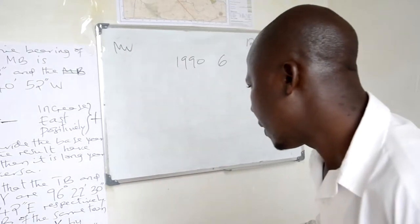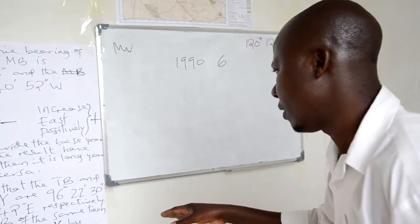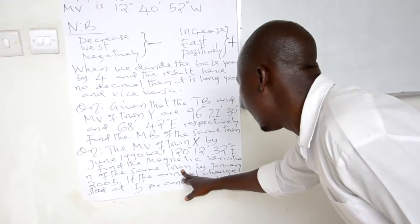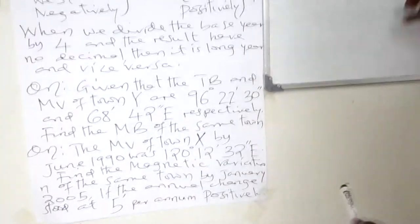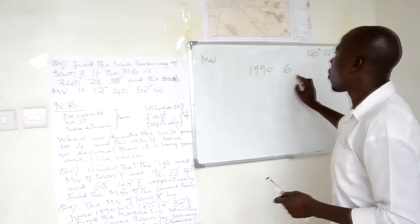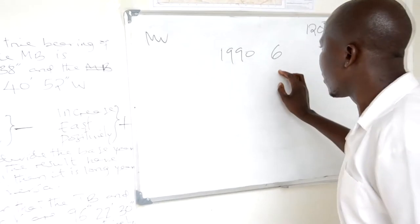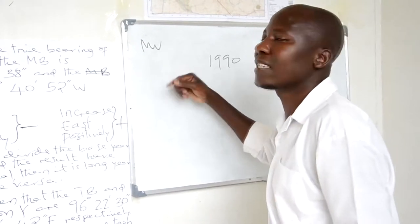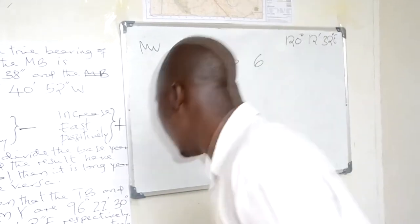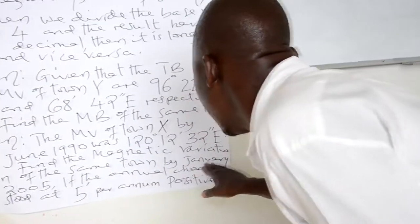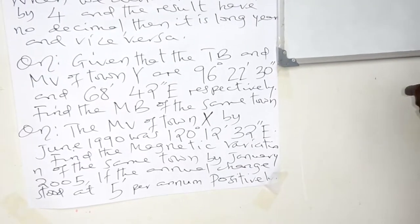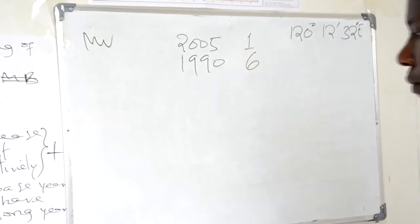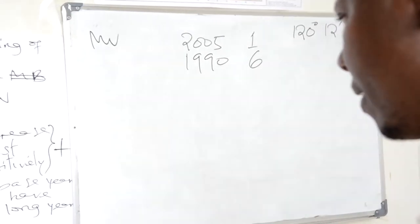Find the magnetic variation of the same town. This is the new one. The magnetic variation of town X at this year is the old one. You are guided to calculate the new magnetic variation of the same town at a different year — January 2005. The annual change is 5 minutes per annum, possibly.